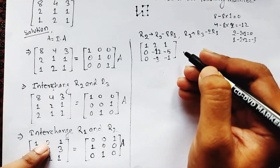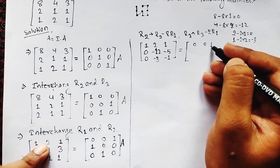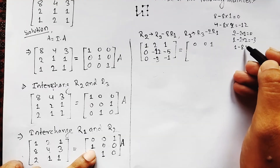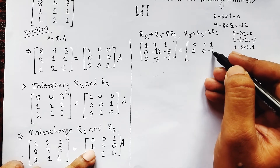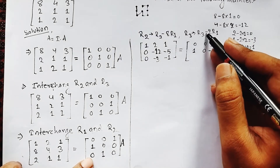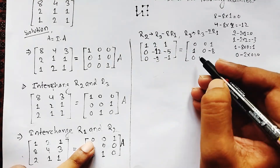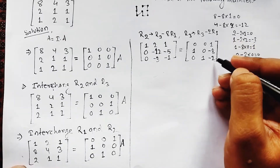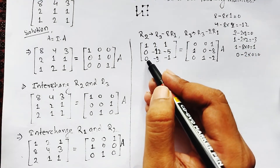On the identity side, for R2 (R2 − 8×R1): [1−8×0, 0−8×0, 0−8×1] = [1, 0, −8]. For R3 (R3 − 2×R1): [0−2×0, 1−2×0, 0−2×1] = [0, 1, −2]. We have now converted the two elements in column 1 below the pivot to zero.